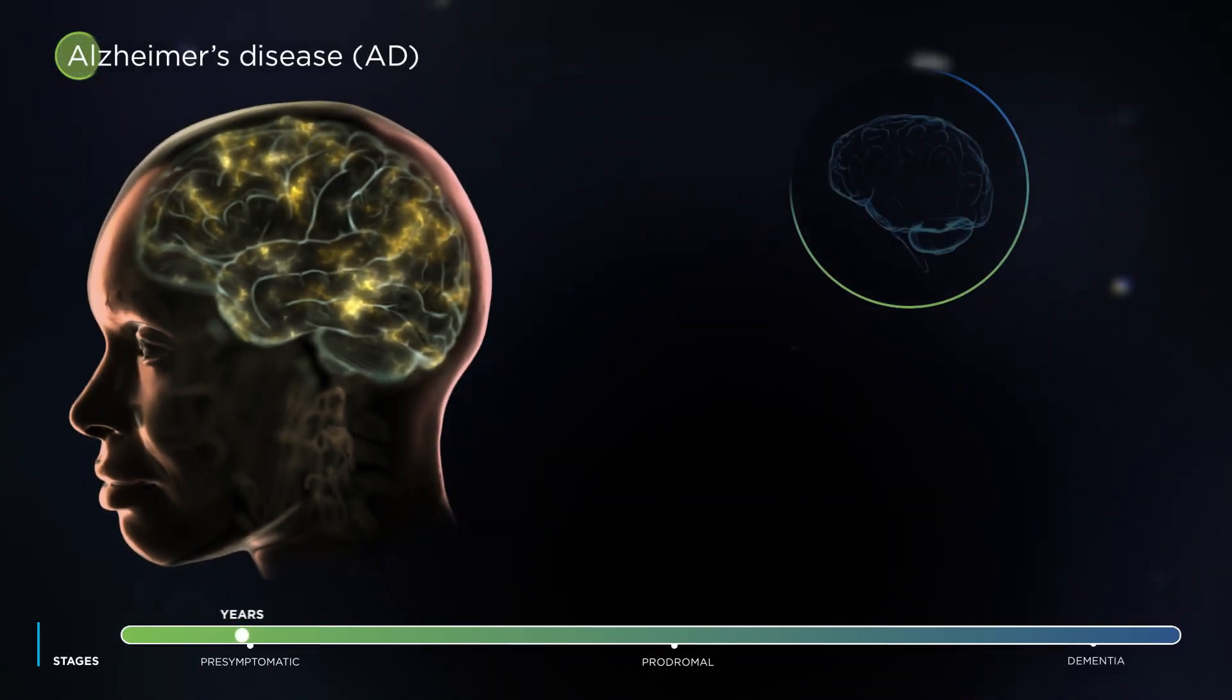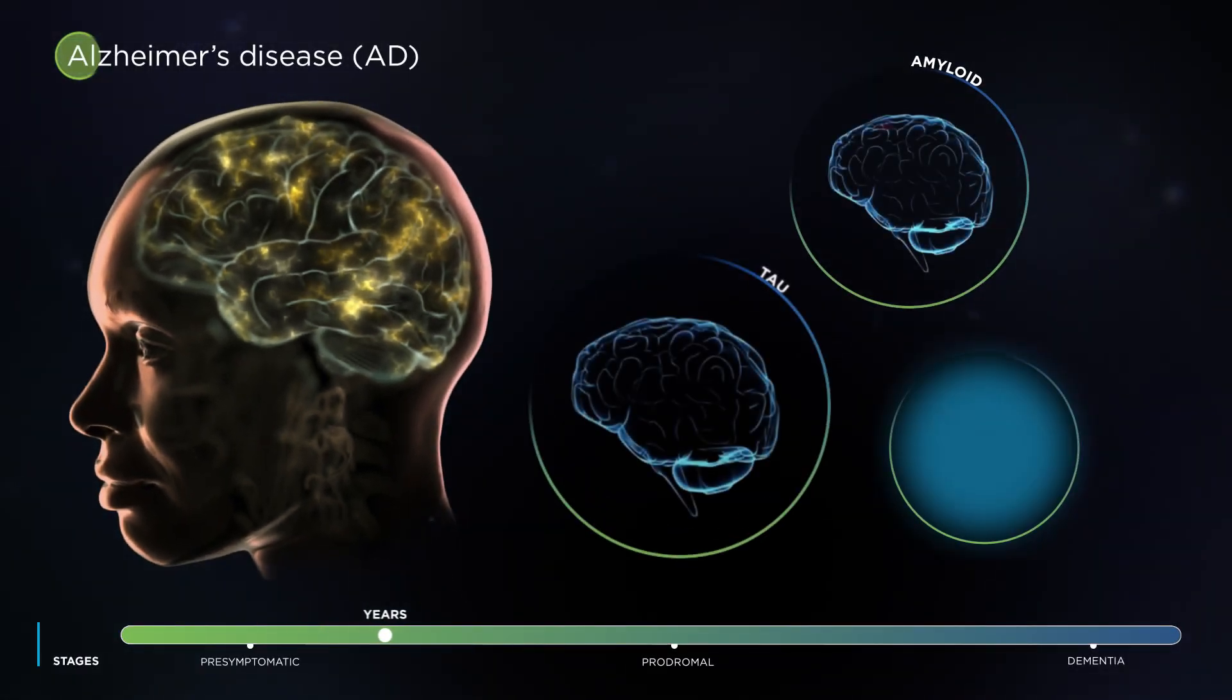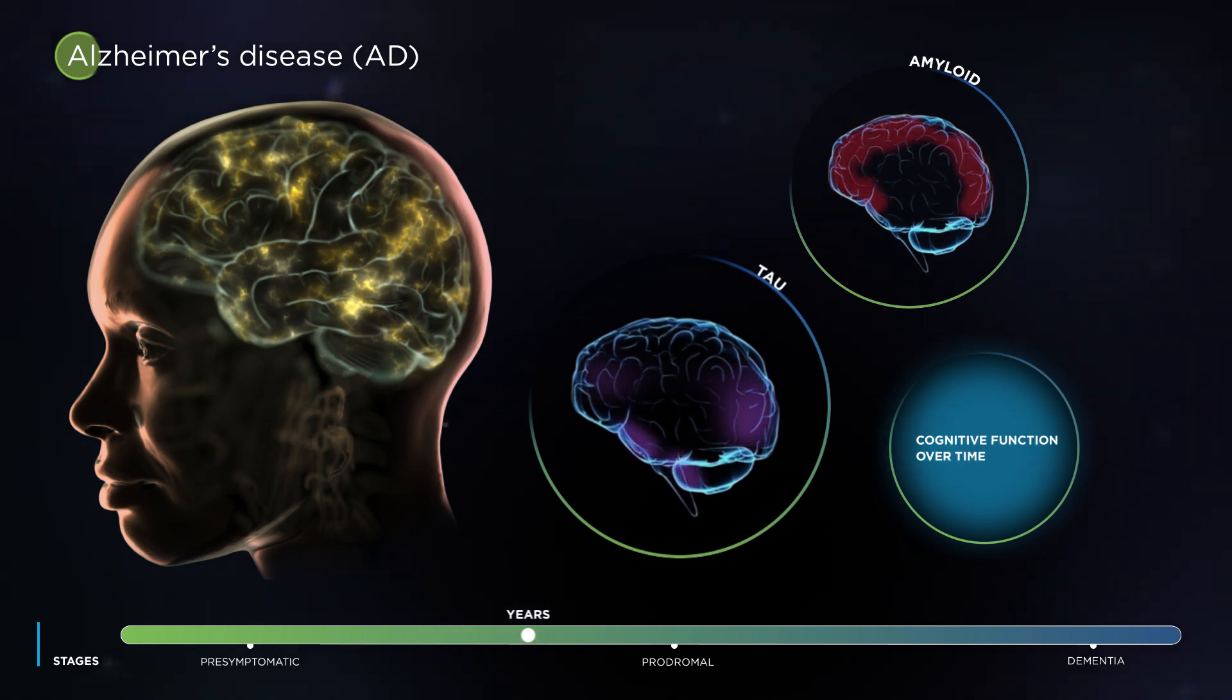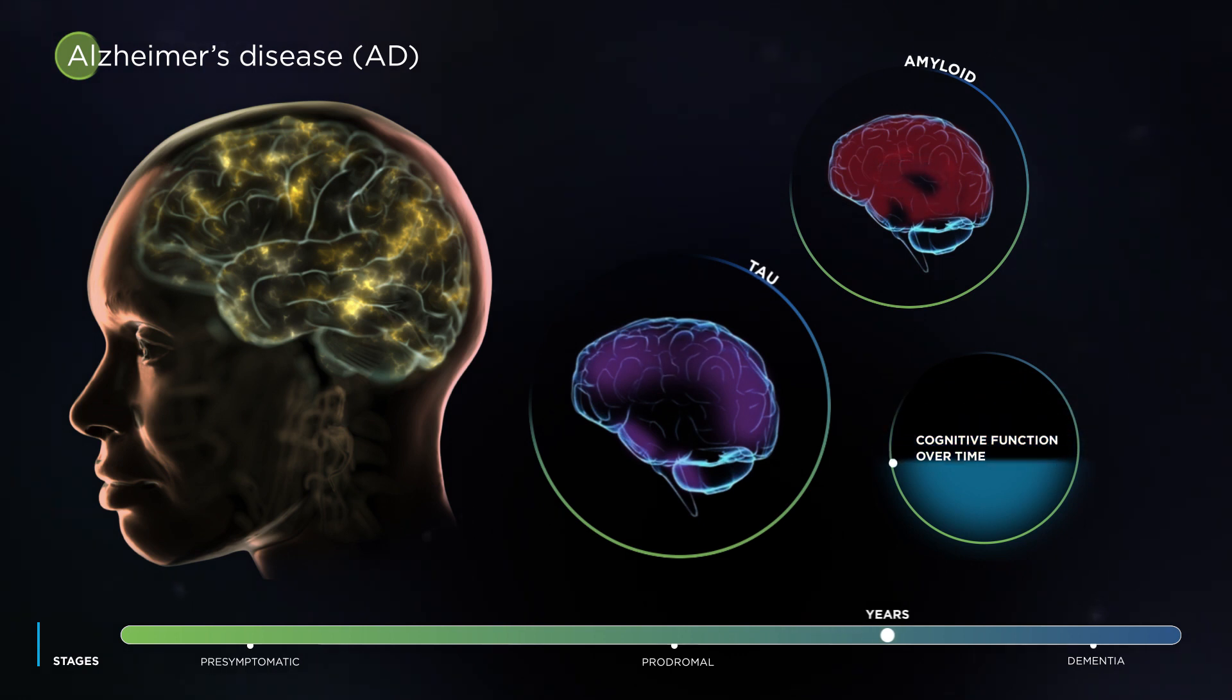Alzheimer's disease, or AD, is a progressive neurodegenerative disease and the most common cause of dementia in adults. However, disease pathology begins decades before symptoms of cognitive impairment emerge.